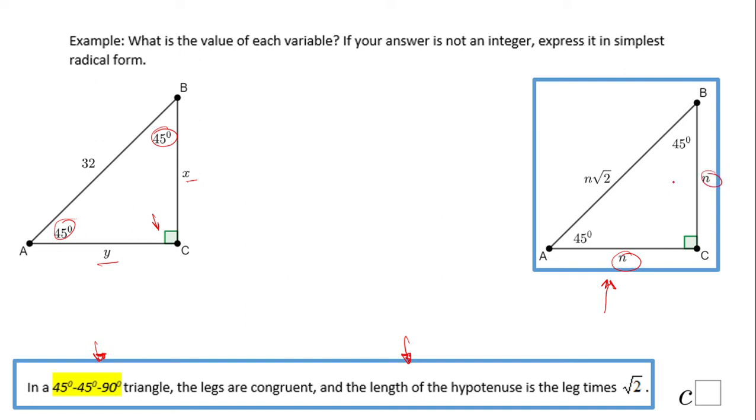So how am I going to use this picture to solve this problem? I'm looking here and I notice this 32, which is the hypotenuse. So this 32 is equal to n square root of 2.